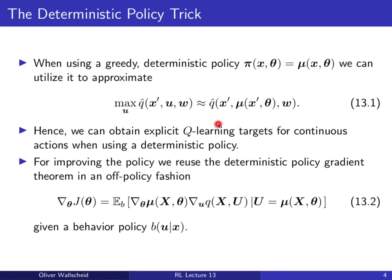The policy improvement step uses the deterministic policy gradient, applied in an off-policy fashion by sampling state-action transitions from a behavior policy b. Since μ is a deterministic policy, exploration must be introduced through a behavior policy b — for example by adding noise — especially if the environment is not sufficiently stochastic. This will be discussed in more detail later.